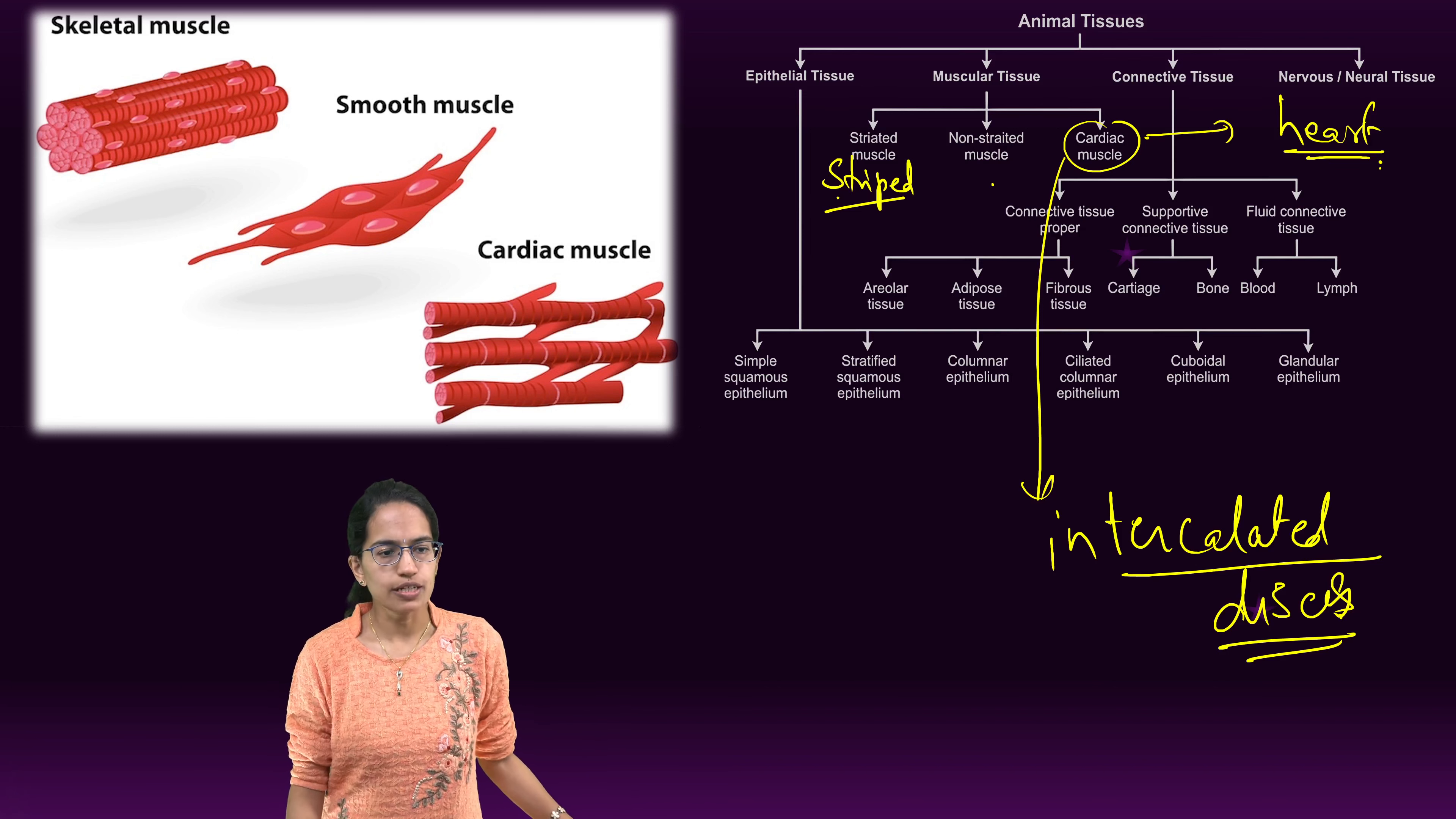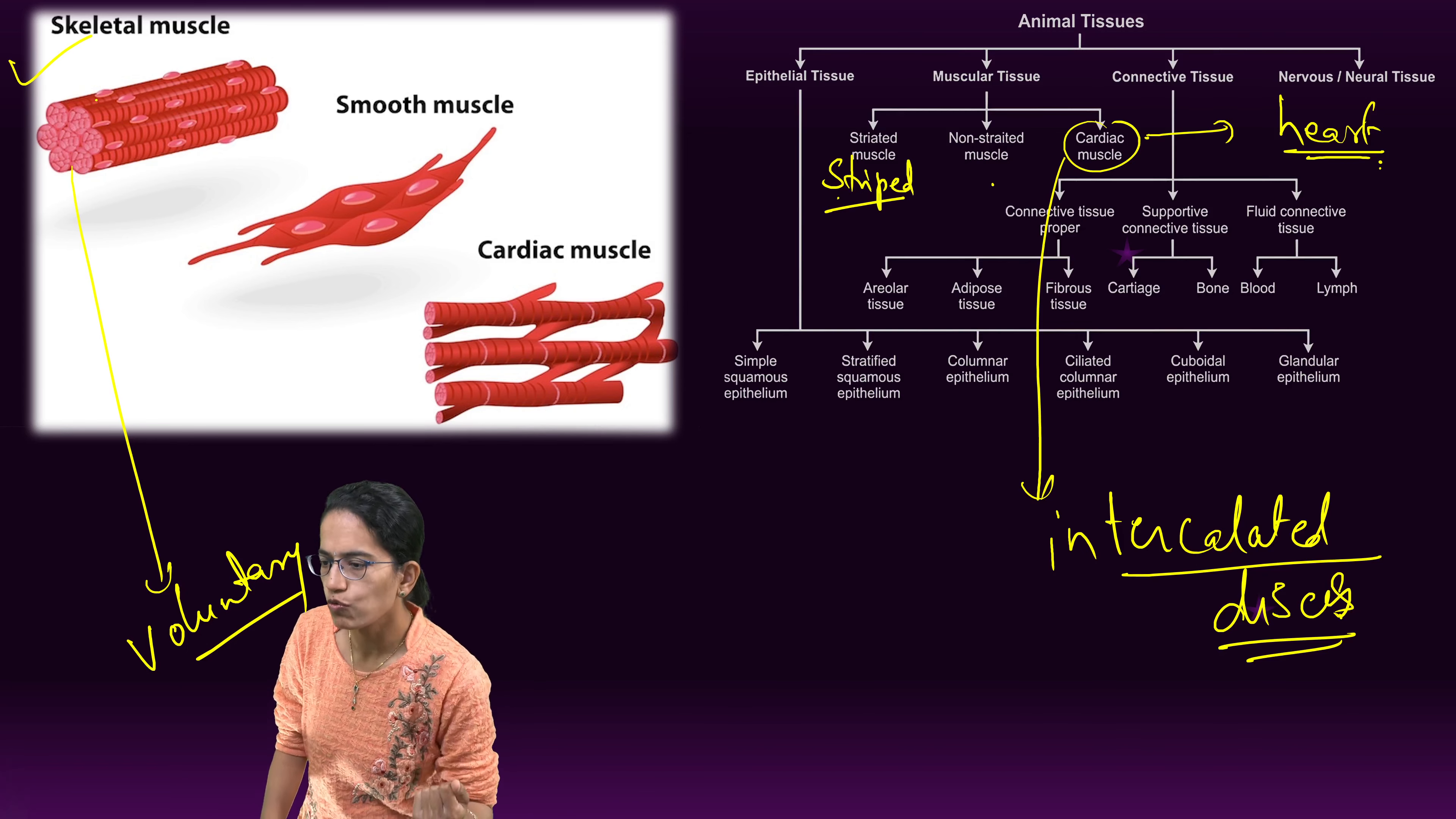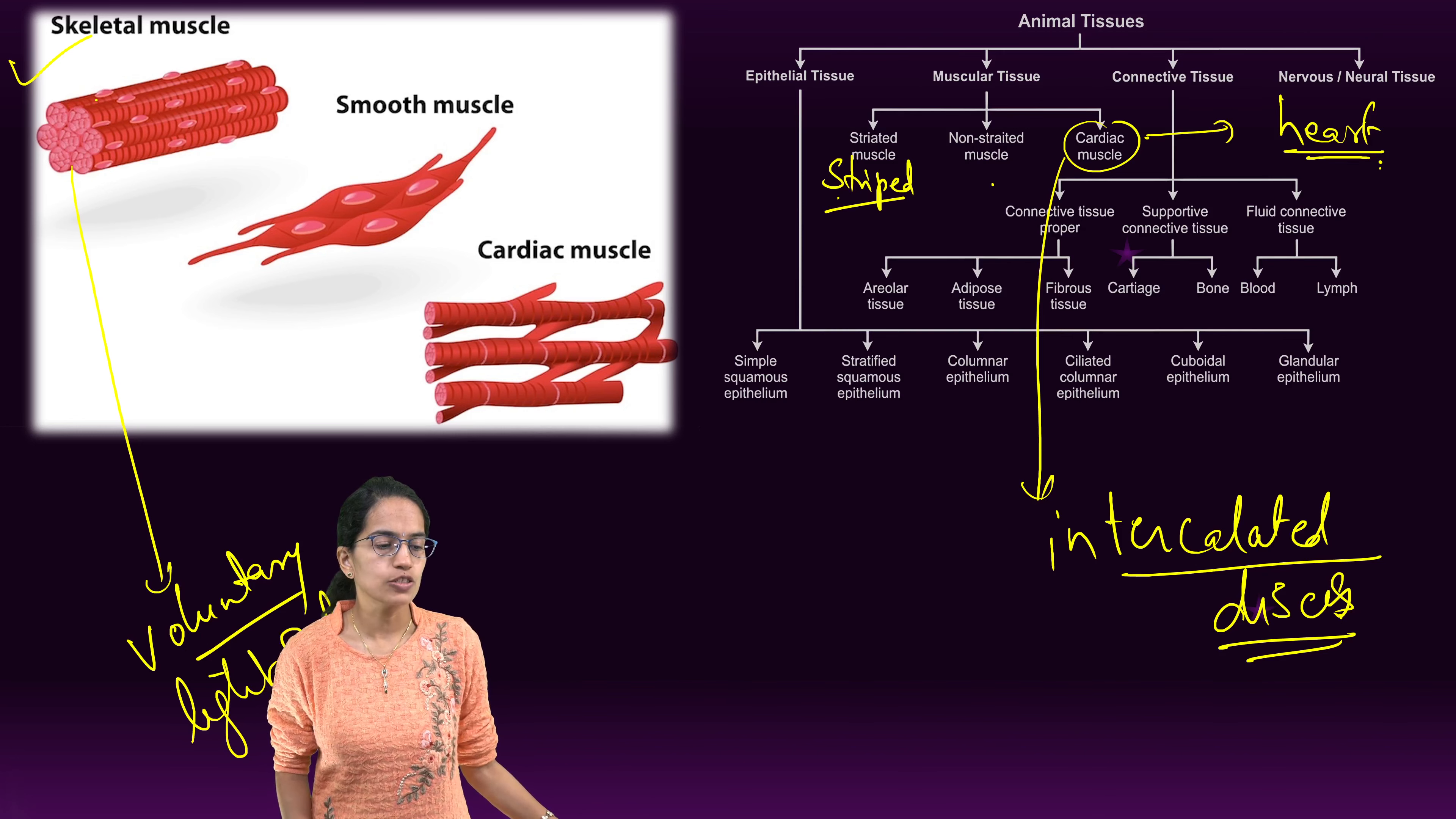The next is striated muscles. Striated muscles, or skeletal muscles, also called striped muscles, are voluntary. That means I have full control whether I want to move my hand or not. The most important feature is it has alternate bands of light and dark color, as you can see in the diagram.